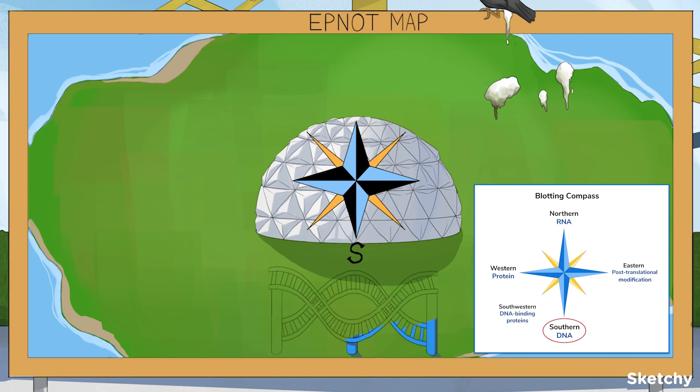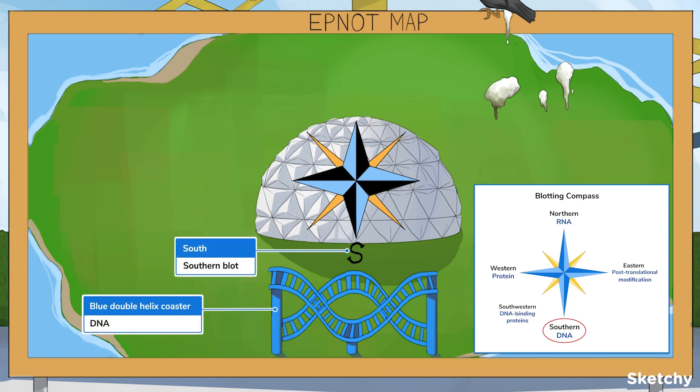First is Southern blotting, a method developed by Edwin Southern in the mid-70s. It looks for individual DNA sequences in a large sample of DNA. To remember that, head on down south and hop onto the blue double helix roller coaster.